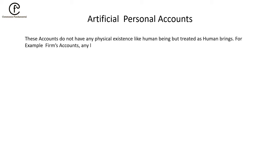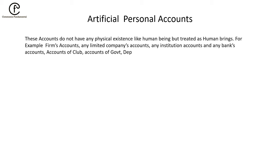Artificial Person Accounts are those not physically walking, but treated as human beings. For example, firms, capital accounts, any limited company account, any institution account, any bank account, account of a club, account of government departments, etc. Any account linked to a firm — a firm is not a human but is treated as a person. Any person created by law is called an artificial person.